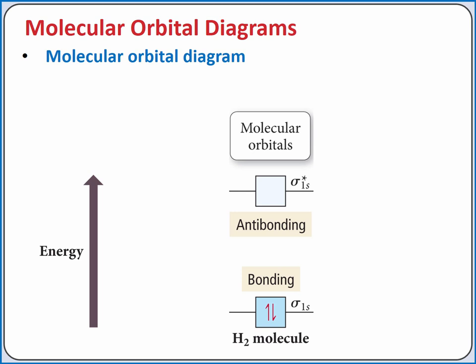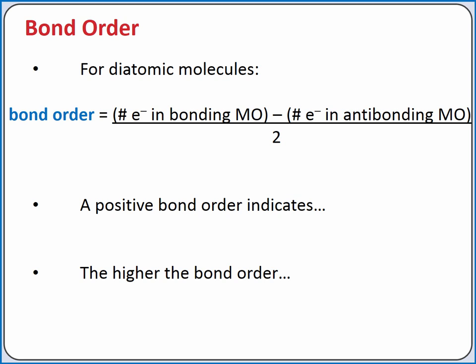We can calculate the bond order for diatomic molecules in molecular orbital theory by taking the number of electrons in bonding molecular orbitals, subtracting the number of electrons in antibonding molecular orbitals, and dividing by 2. A positive bond order indicates the molecule or polyatomic ion should be stable enough to exist. A bond order of 0 indicates it is not energetically favorable to form the molecule. In general, the higher the bond order, the stronger the bond.